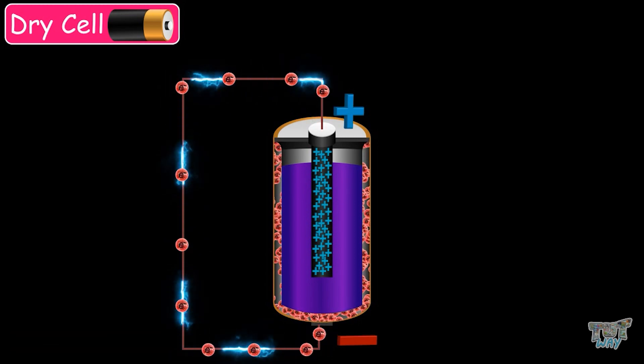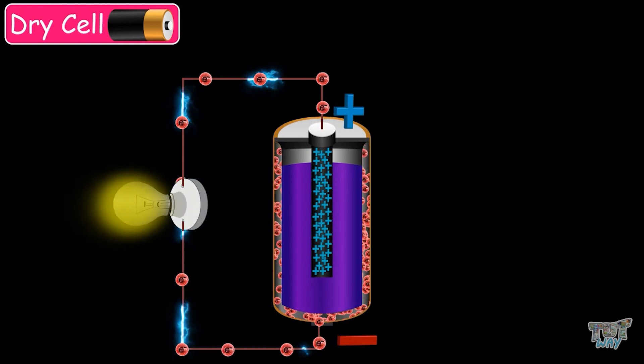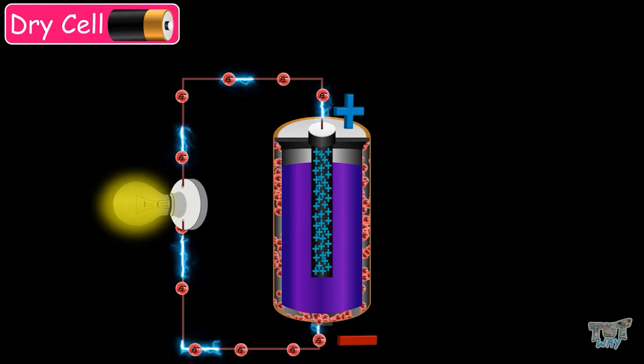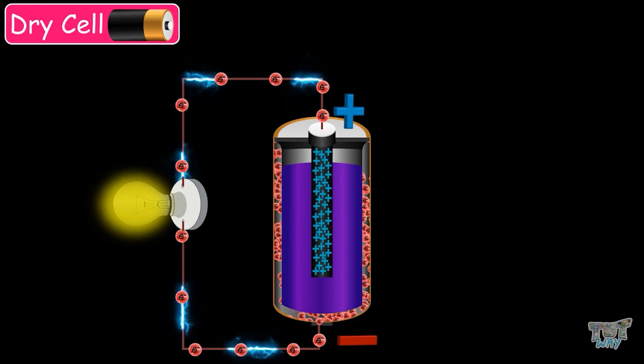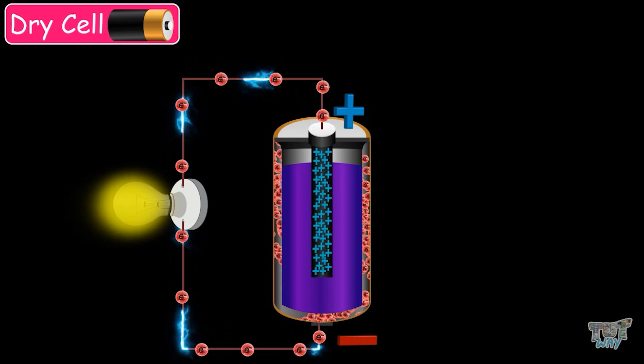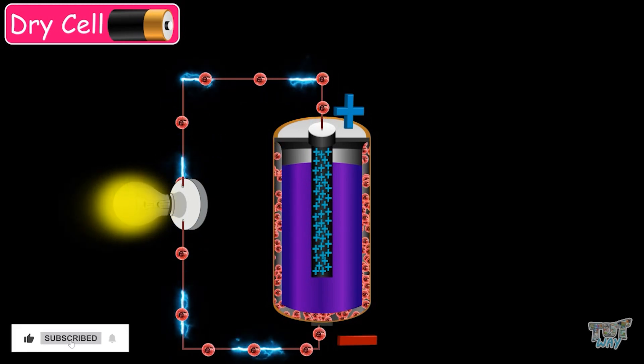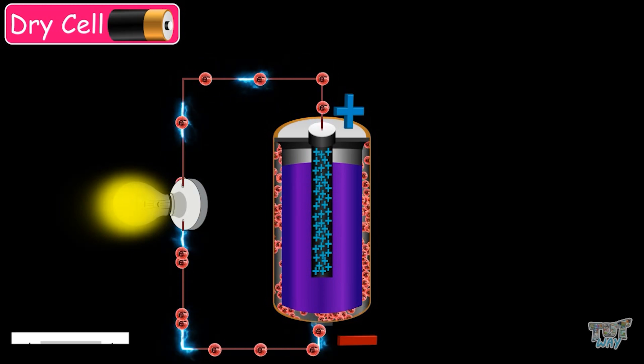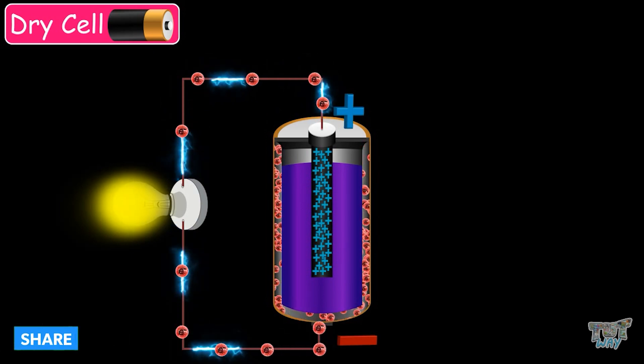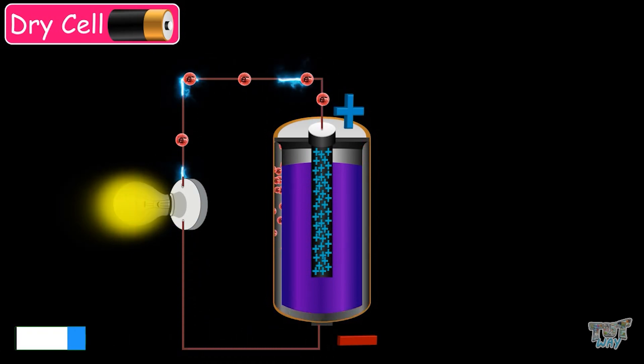And if you will connect any bulb across that connecting wire, it will start glowing because of the flow of electrons, that is, the electric current. The current flows, or the electrons move from the anode to the cathode, till all the electrons in excess at the anode have moved to the cathode.